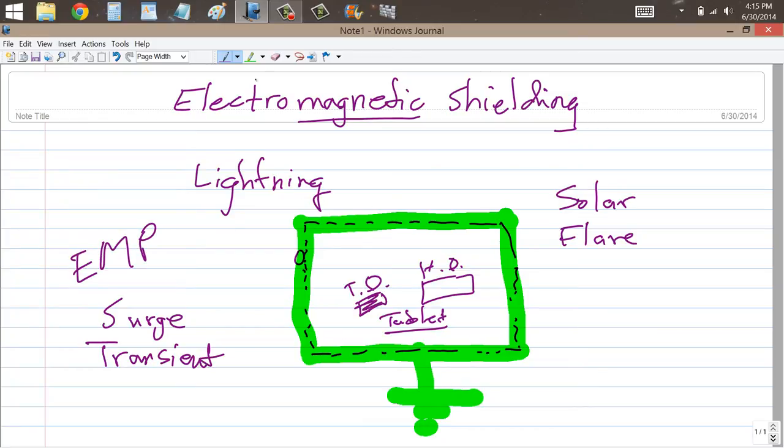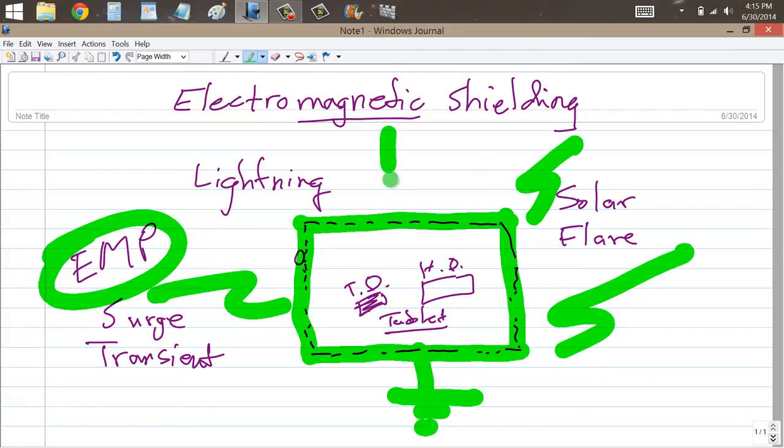This electromagnetic pulse sets up a powerful electromagnetic field over a wide band of radio frequencies, and it's so powerful that it can sometimes affect data on things like external hard drives, thumb drives, or tablet devices.